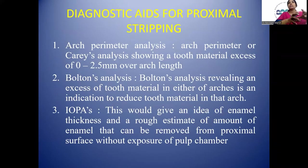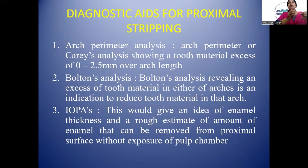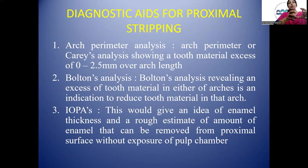Diagnostic aids for proximal stripping include: arch perimeter analysis — if the caries analysis shows a tooth material excess of 0 to 2.5 mm, it is an indication for proximal stripping; Bolton's analysis — reveals excess tooth material in both arches; and IOPA — gives an idea of the enamel thickness and the amount of enamel that can be removed from the proximal surface without exposure of the pulp chamber.